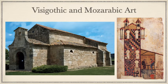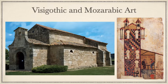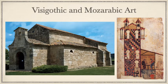Moving on to Visigothic and Mozarabic art: the Romans ruled Spain, but in the early 5th century the cities there fell to German invaders, most notably the Visigoths, who had converted to Christianity. We see their influence in smaller stone churches, such as the church of San Juan Bautista, or Saint John the Baptist, built in 661. Visigoth churches are basilican in form but often have multiple apses and regularly incorporate horseshoe arches. The Visigoths were eventually pushed out by the Islamic Caliphs, and the term Mozarabic refers to Christians living in Arab territories.